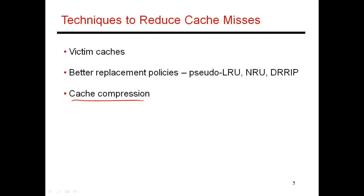Because of these complexities, most commercial processors don't actually implement cache compression. On the other hand, you have a simpler technique like a victim cache, which is used in many processors.